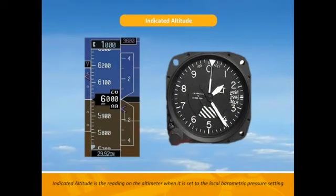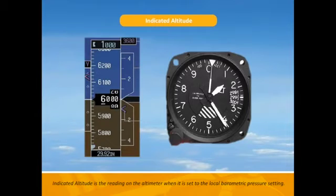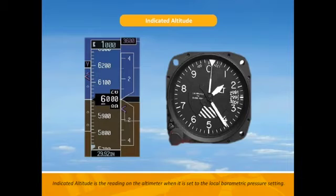The first type of altitude we are going to discuss is indicated altitude. This is the most frequently used type of altitude as you read this directly off your altimeter in the cockpit. On the left we have the G1000's tape version of altitude, and on the right we have the analog gauge version of altitude.